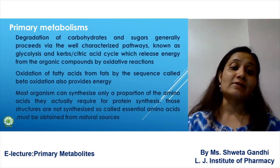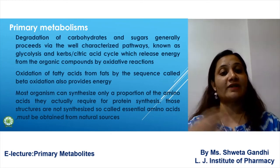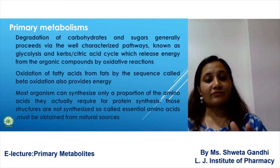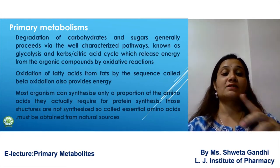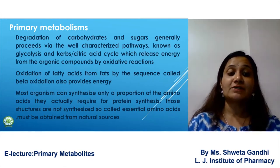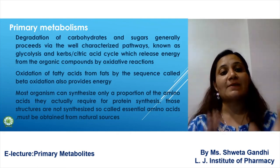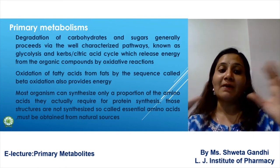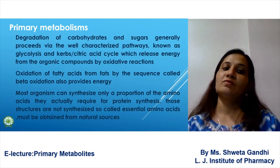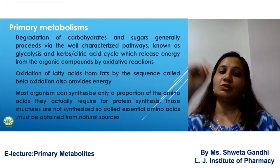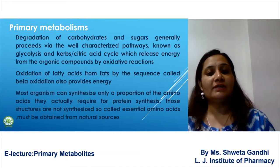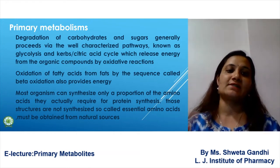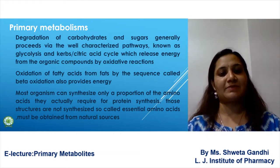The degradation of carbohydrates and sugars is generally processed through certain pathways, for example the glycolysis pathway and the citric acid cycle (Krebs cycle). You will better understand these pathways in a separate chapter in unit 1, where the citric acid cycle and Krebs cycle are covered in detail.